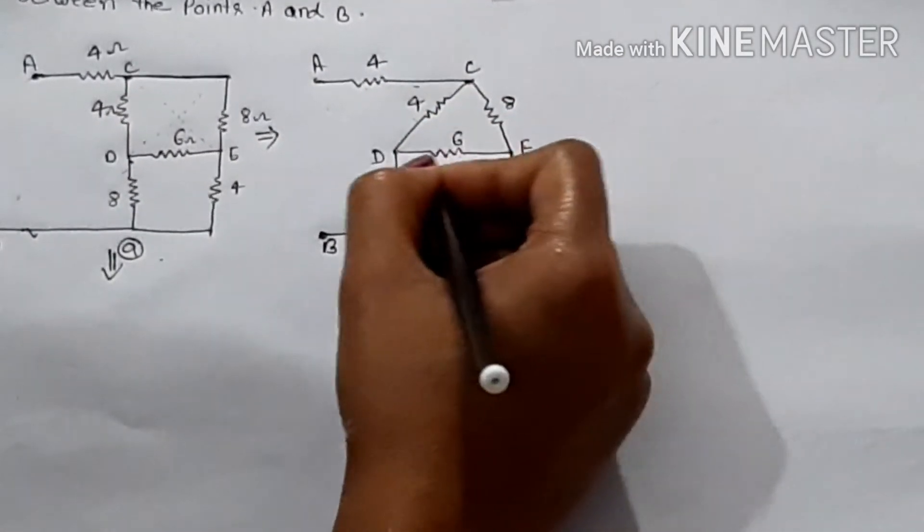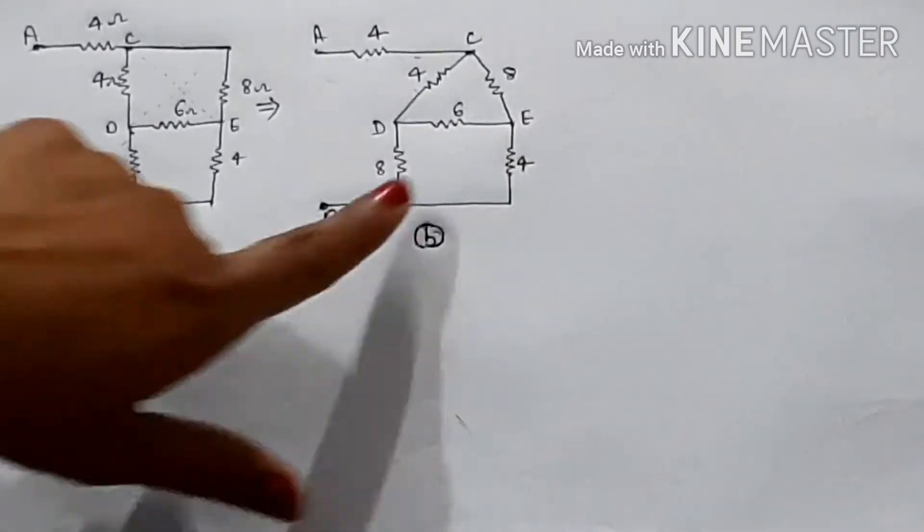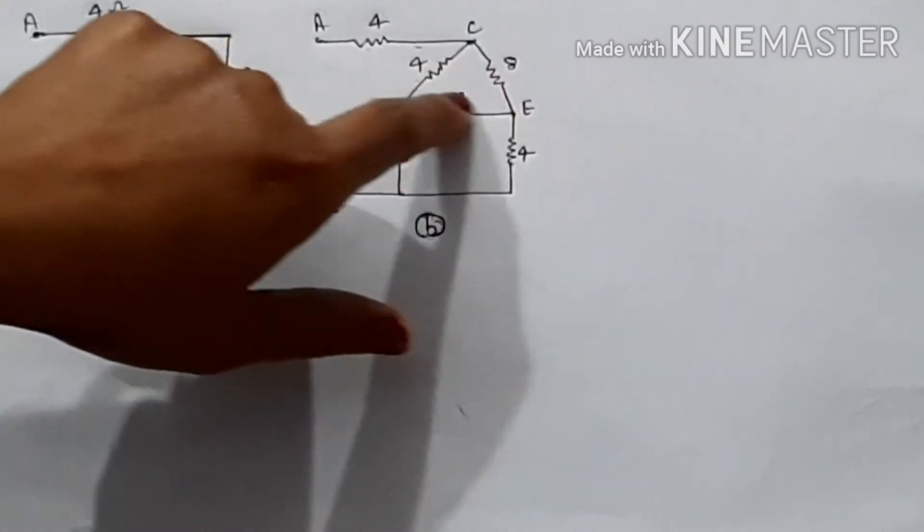Then C and B resistance is in triangular form. 4 ohm here, 8 ohm here, 6 ohm here, 8 ohm, 4 ohm. Now my resistance is delta form.